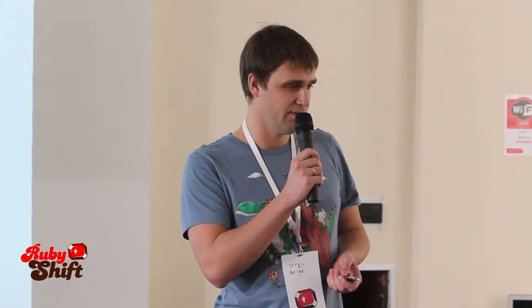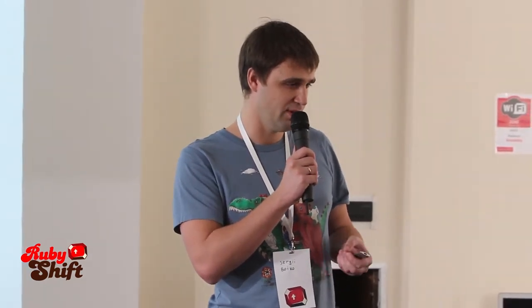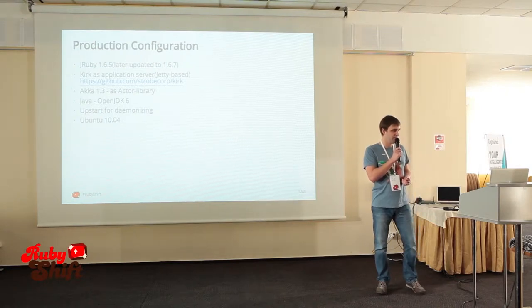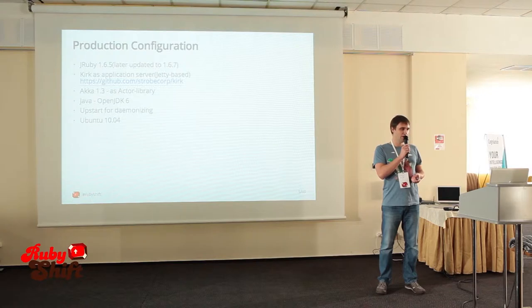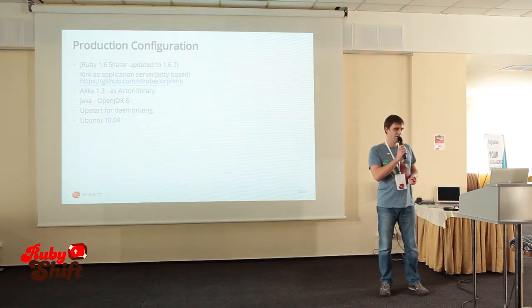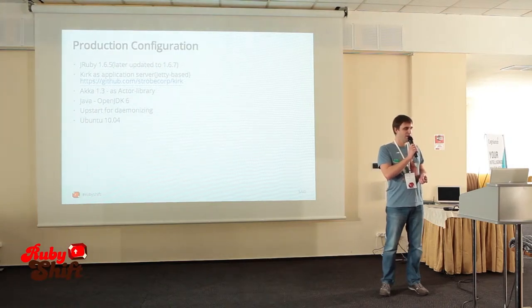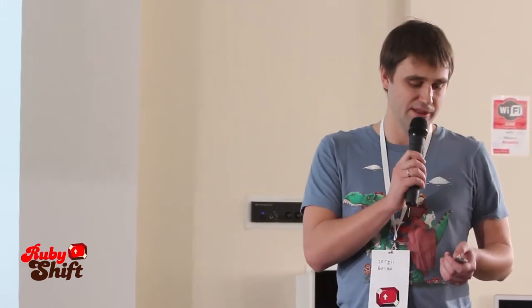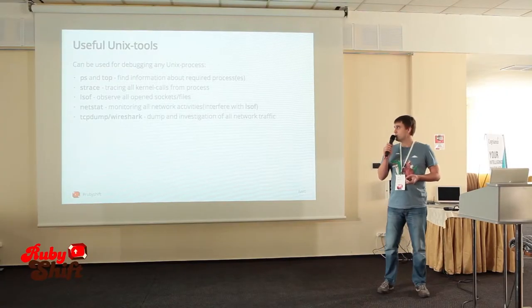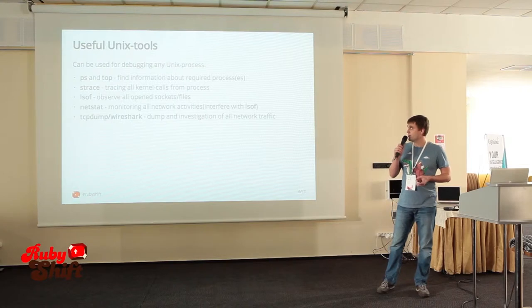This is our production configuration we started from. At the moment of starting, we used stable JRuby version 1.6.5. We use Kirk, a JRuby wrapper from a Jetty-based server — Jetty is a very cool Java server. We use Akka as an actor library and OpenJDK 6, and Puma for minimizing Kirk.